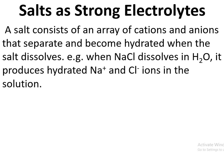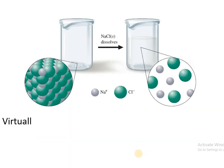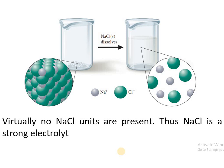For example, when NaCl dissolves in water, it produces hydrated Na⁺ and Cl⁻ ions in the solution. The solution contains ions of sodium and chloride, and virtually no NaCl units are present. Thus, NaCl is a strong electrolyte — when dissolved in water, it completely dissociates into its Na⁺ and Cl⁻ ions, and no NaCl unit remains in solution.